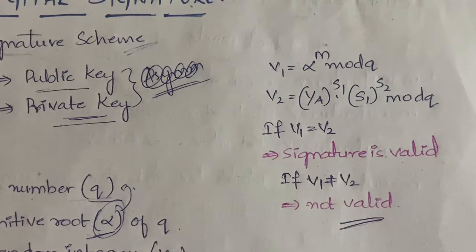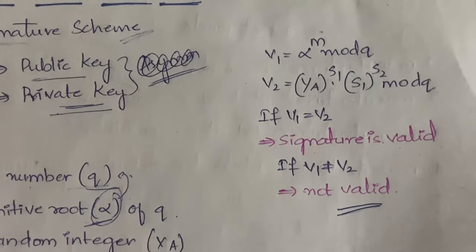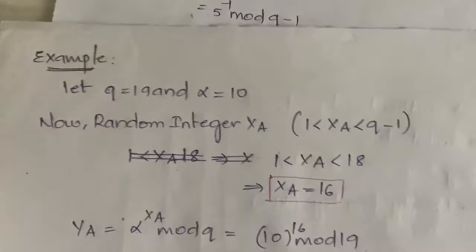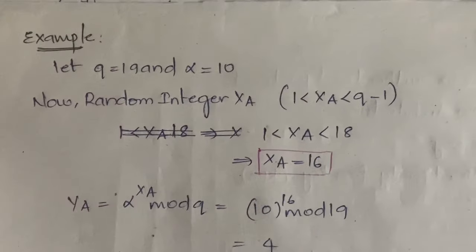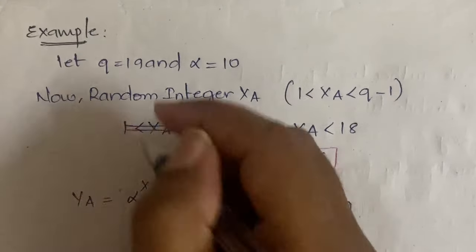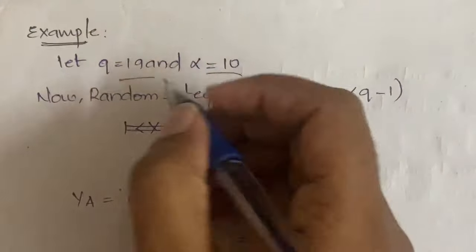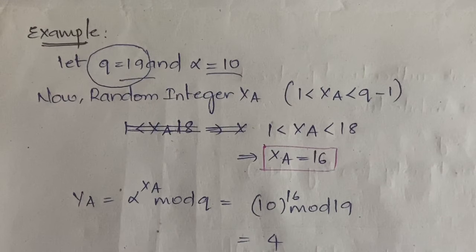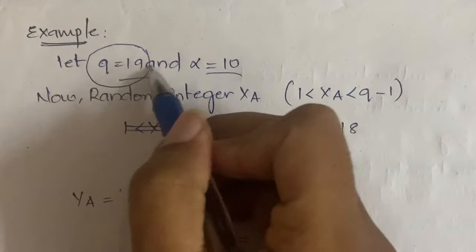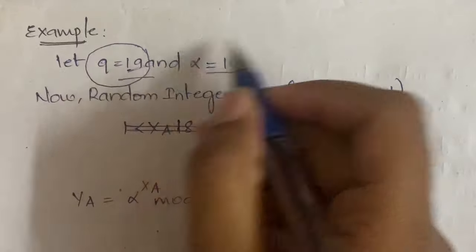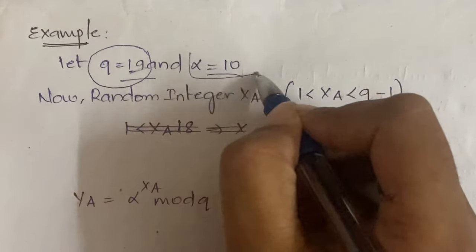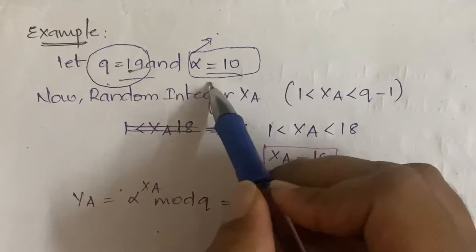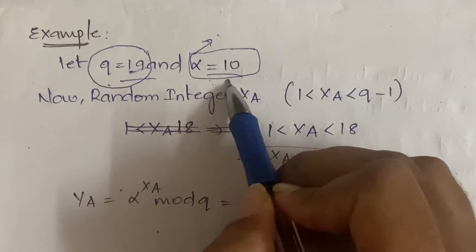If v1 is not equal to v2, the signature is not valid. Now let's go through an example. We assume q = 19, which is a prime number, and alpha = 10, which is the primitive root of q.